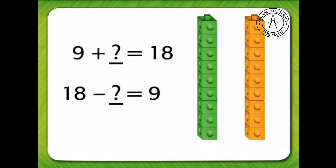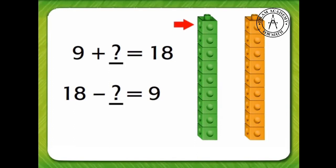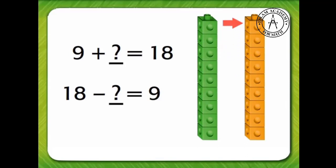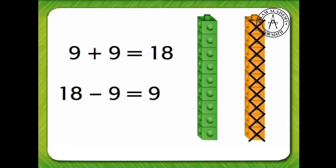Let's try using doubles facts again to help us subtract. How many cubes are in this stack? 1, 2, 3, 4, 5, 6, 7, 8, 9 cubes. This stack has 1, 2, 3, 4, 5, 6, 7, 8, 9 cubes too. Is that a doubles fact? Yes, it is. 9 plus 9 equals 18. Let's use that doubles fact for the subtraction problem. 18 minus 9 equals 9.